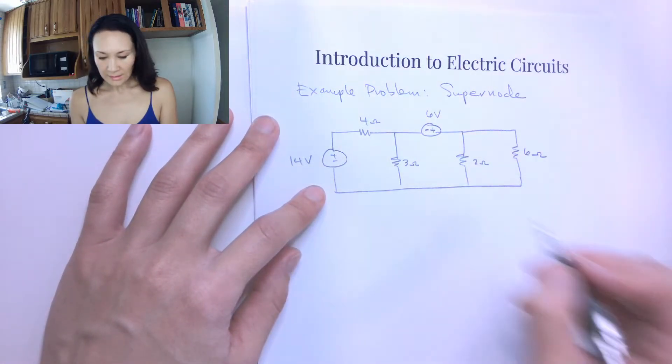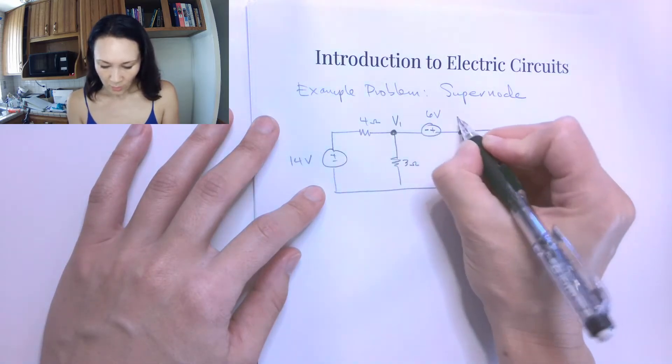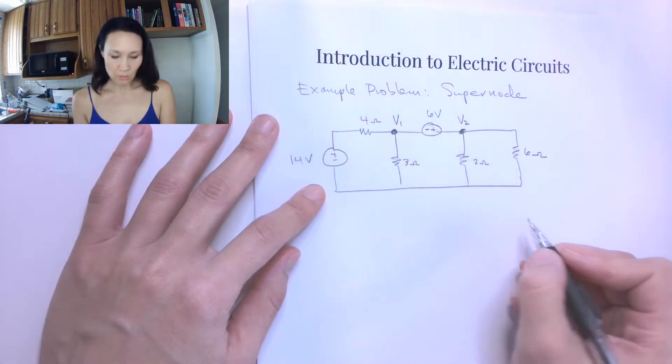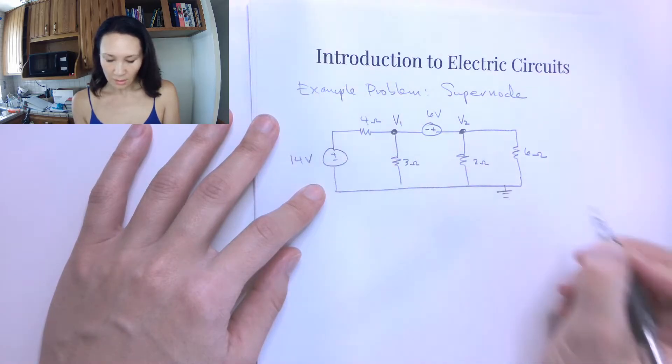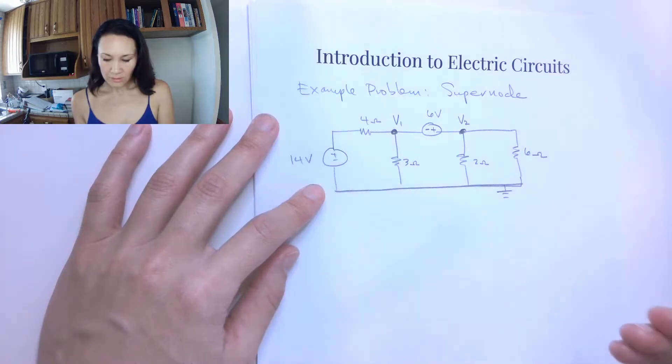The first step in the node voltage method is to label all nodes. So I'll call that V1, and I'll call that V2. Those are my two nodes. And then to designate a reference node. So I'll have this bottom wire be my reference node.